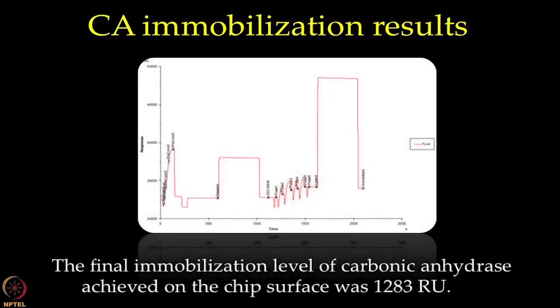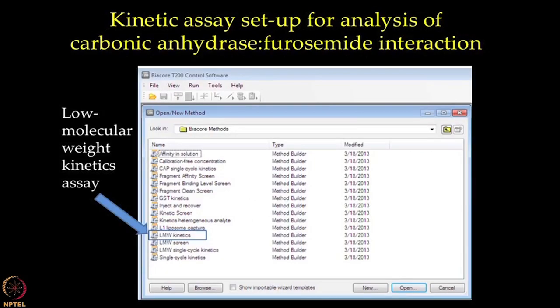Since it is recommended to use lower immobilization levels for kinetics assay compared to screening assays, we targeted an immobilization level of 1500 RU for carbonic anhydrase. As shown in the figure, the immobilization procedure resulted in final immobilization level of 1283 RUs. With this, we proceed further with setting up of kinetic assay wizard for low molecule weight compounds to study the interaction between carbonic anhydrase and furosemide.